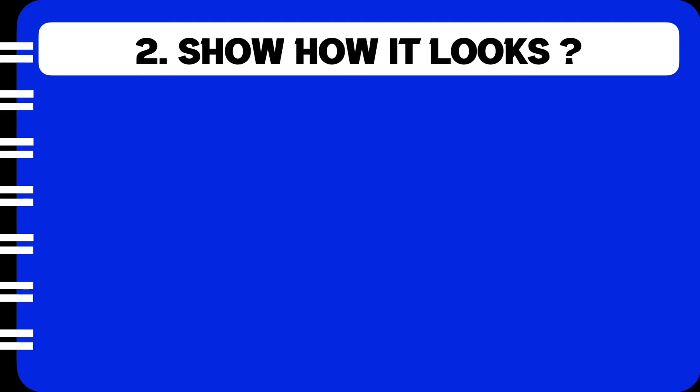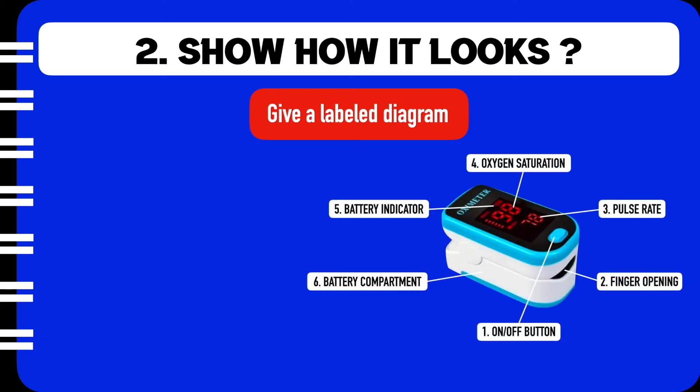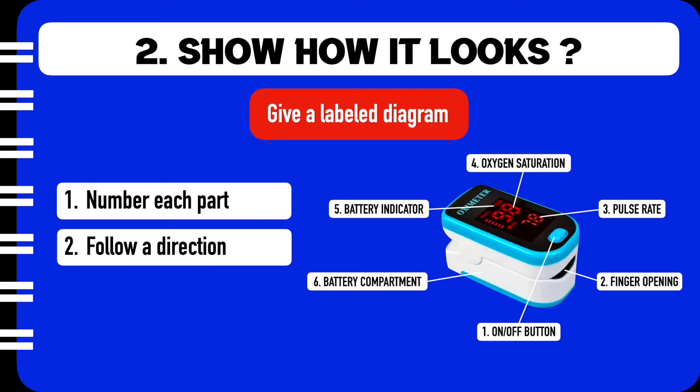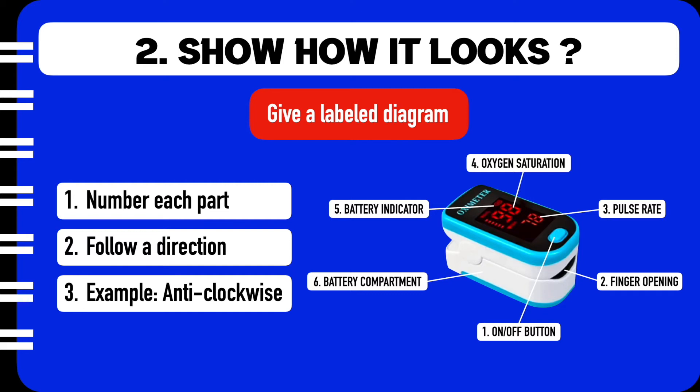The second part of a description is to talk about how the object looks. In this case, we will be using a labeled diagram. Now when you look at the diagram, you will notice the first thing is that each part or component is numbered. Second, there is a direction that is followed. In this case, we are going in the anti-clockwise direction, but you are free to move it in other directions like clockwise, left to right, right to left, bottom up or top down.